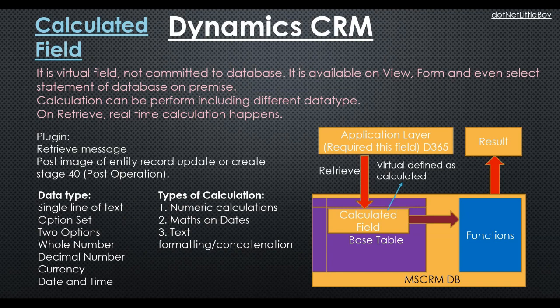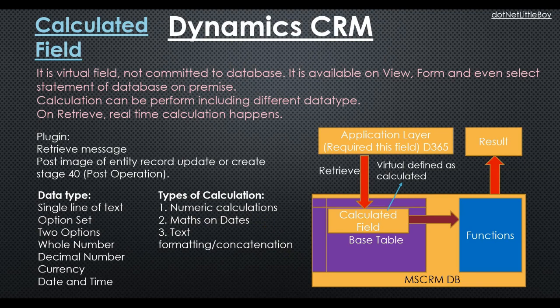The data types that can be created as a calculated field in Dynamics include: single line text, option set values, two option set values, whole number, decimal numbers, currency, and date/time. Regarding the types of calculations, the calculated field mostly performs three types of operations: numeric calculations such as multiplying currency or decimal/integer numbers; date math such as adding or subtracting date values; and string formatting or concatenation for single-line or multi-line strings.